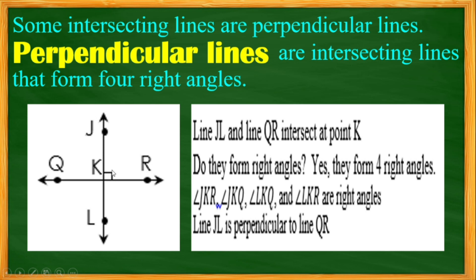We have angle JKR as a form of right angle. Angle JKQ as another right angle. And JKL, another right angle. Then RKL, another right angle. So we have 1, 2, 3, 4 right angles. This would be a perpendicular line.